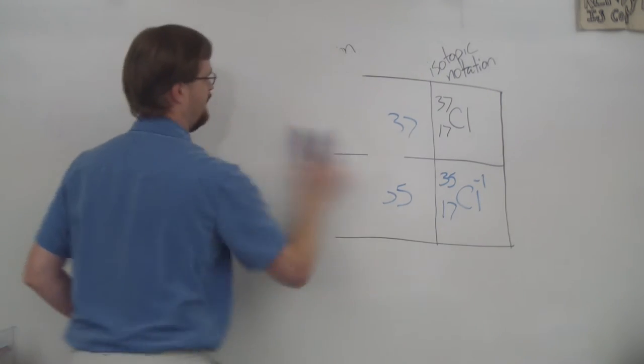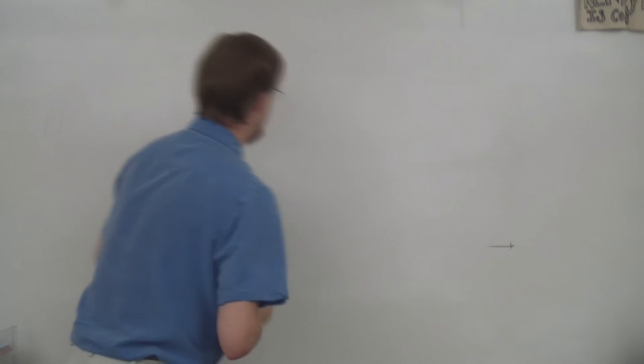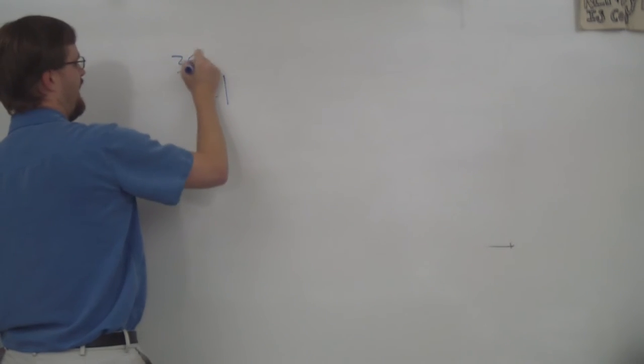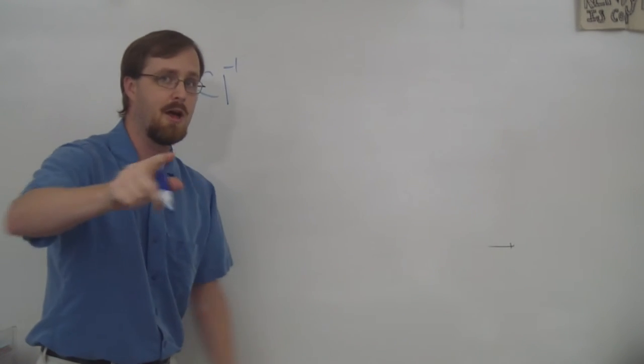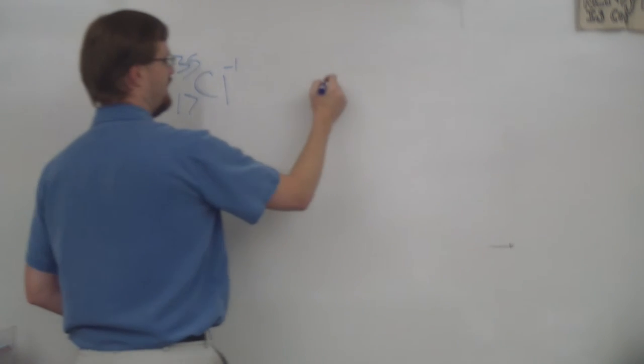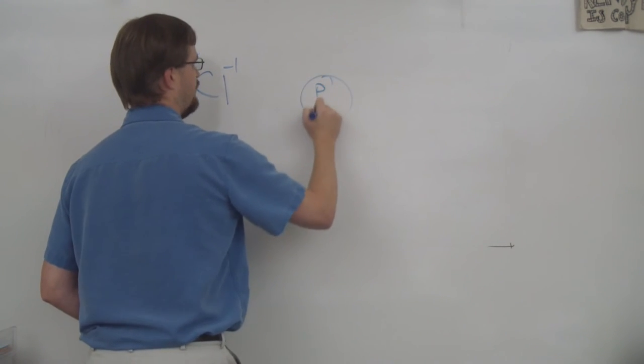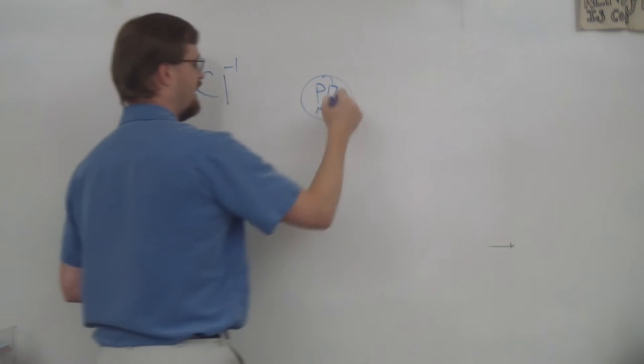All right, so we will take our second ion, which is Cl-35, 17, and a charge of negative one. We will need to draw the Bohr model and an e-dot structure. All right, so here we go. In the nucleus, we have protons, we have neutrons. Well, we just wrote that down: that's 17 and 18.